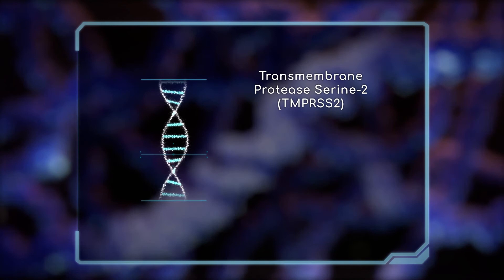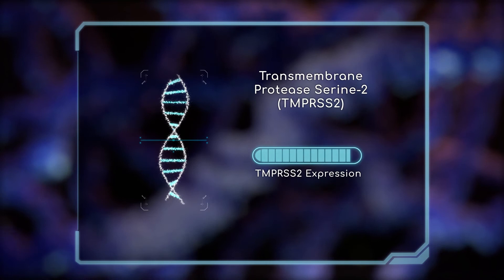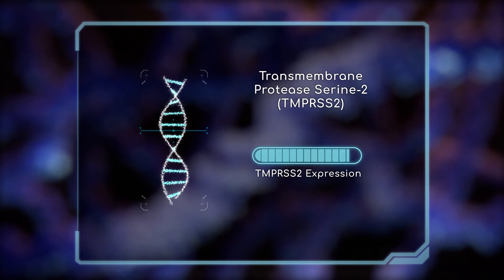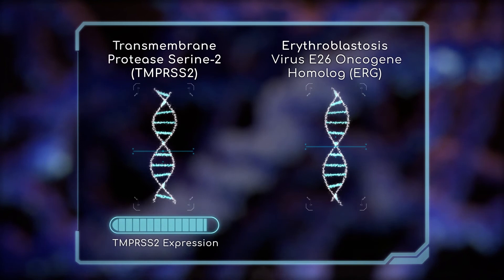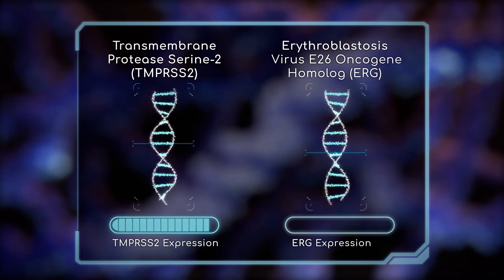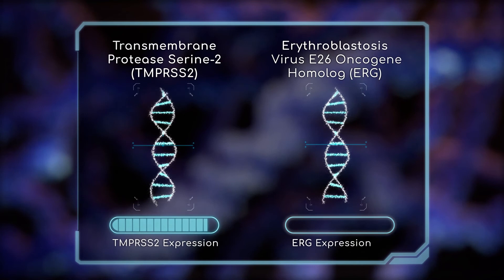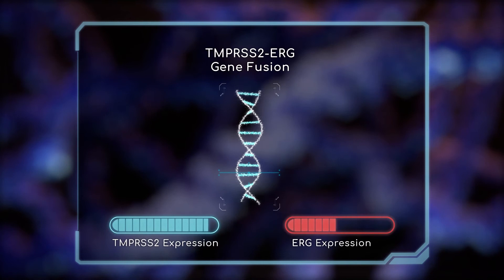Transmembrane protease serine 2, TMPRSS2, is a protein regularly expressed and driven by androgen receptor signaling within the luminal cells of the prostate. Along the same chromosomal strand of DNA is the gene for Erythroblastosis virus E26 oncogene homolog, ERG, a known oncogene. In normal functioning luminal epithelial cells, ERG is not expressed. However, recent evidence has shown that in about 50% of prostate cancer cases in the U.S., the promoter region of the TMPRSS2 gene has become fused to the coding region of the ERG gene, causing cells to express the ERG oncoprotein. It is hypothesized that genomic damage caused by infections and inflammation promotes the formation of the TMPRSS2-ERG gene fusion, possibly playing a very early and not yet well understood role in the development of prostate cancer.